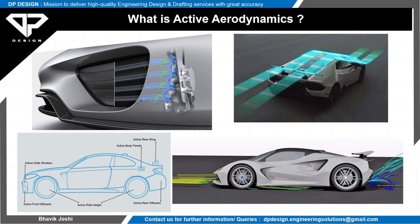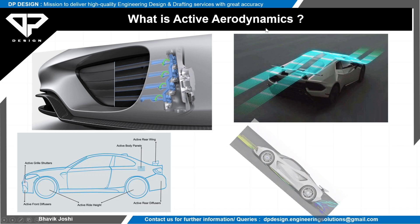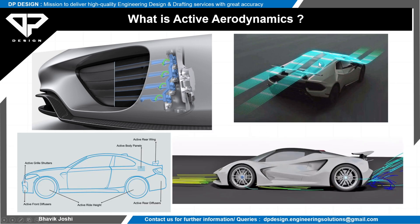This one is the ALA system of the Lamborghini, and this one is the active front grill shutters. Also included are some undertray analysis and rear diffusers, as well as front grill shutters. This is the basic CFD simulation of the Lotus hypercar.